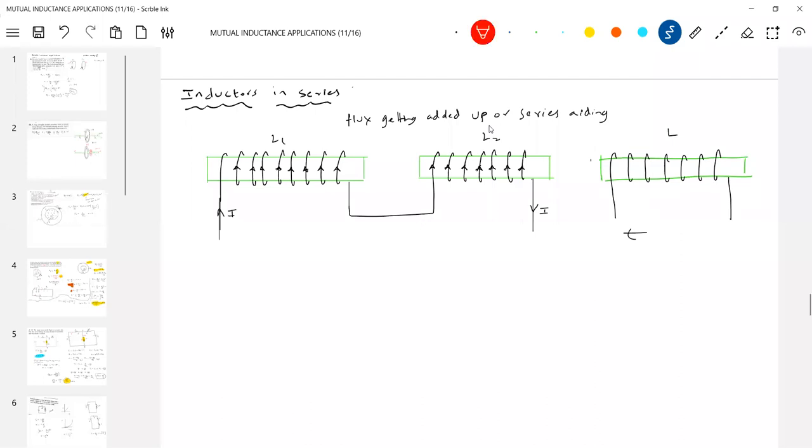So now what is the direction of flux produced by this? I'll show nearby here only B1. What about the flux B-bar produced by this? So the B-bar produced by this B2 will support B1 flux getting added up or series aiding. It is called series aiding because B1, B2 will be same direction here. So the flux of second coil will support the flux of first coil or the flux of first coil will support the flux of second coil.